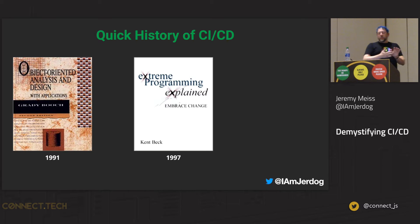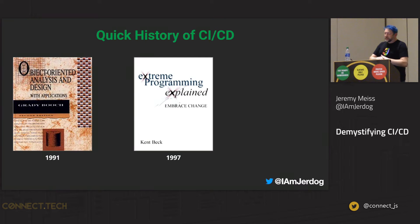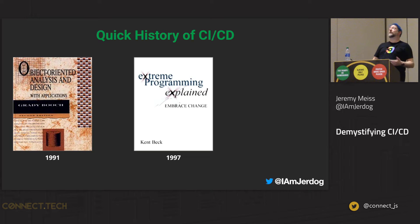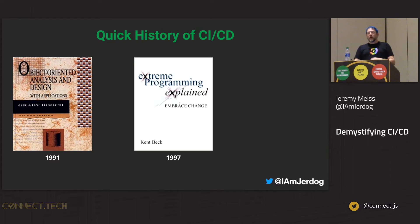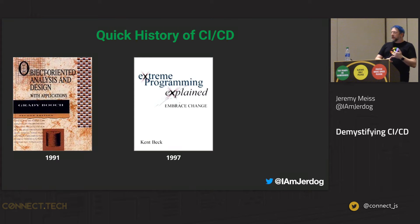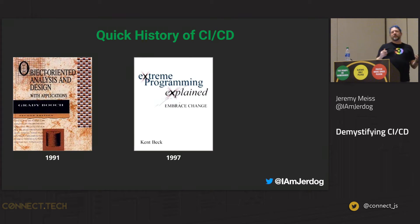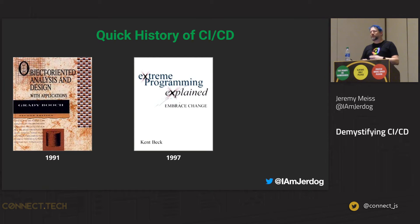From Extreme Programming, we got more and more methodologies that built on that work, like Scrum and Kanban — those all came out of this idea of Extreme Programming. They all had one goal in mind: make it easier to write clearer, higher-quality code, and get it out to users. We recognized that all of this needed to happen, but we didn't really have the tools to make it happen easily at that point.